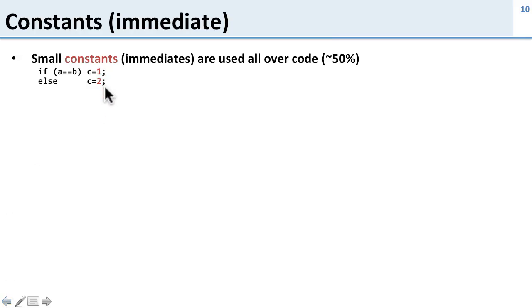If A equals B, C equals 1, otherwise C equals 2. Here we've got two small constants in this code: 1 and 2.